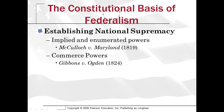Gibbons v. Ogden, 1824, is a case where two men have been granted a monopoly to run a ferry across the Hudson River, which separates Manhattan from New Jersey. The state of New York grants one of them a right to run that ferry, and the federal government grants the other one. They sue each other, claiming they have a monopoly. The Supreme Court says that because the ferry takes off in one state and lands in the other, that's interstate commerce, and therefore the federal government is the only one with the right to govern that. This establishes that if it's a federal power — interstate commerce — only the federal government has ultimate authority there.